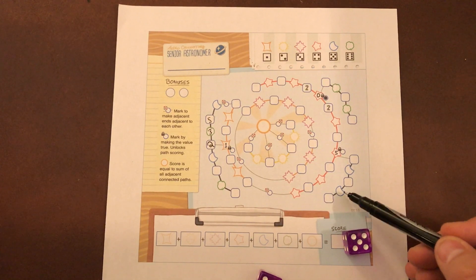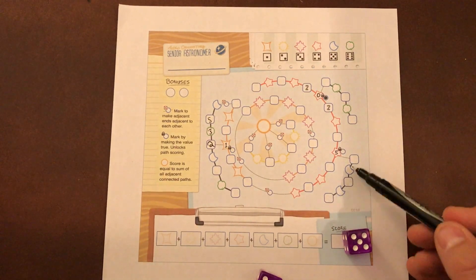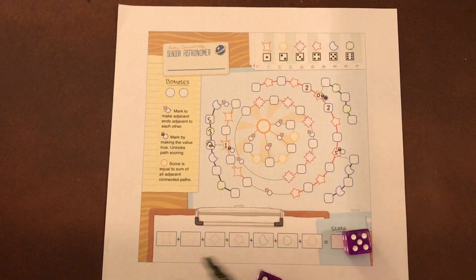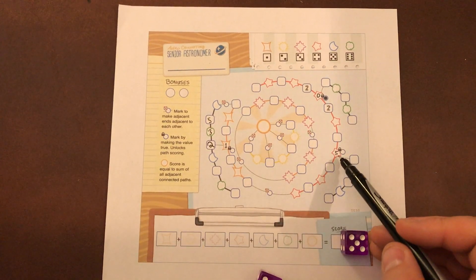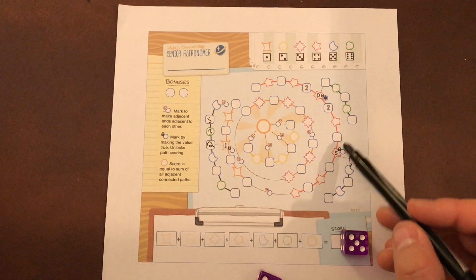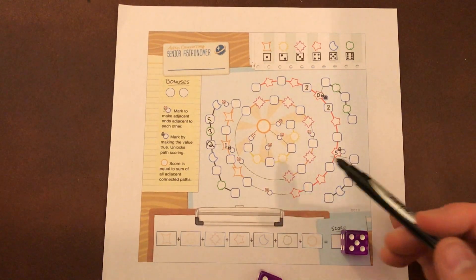So I could have all these different, I could have a five here and a three here, but I don't score them unless I get that lock. So you just have to make that value true with the two digits that you put in the sides of it to unlock that path for scoring.